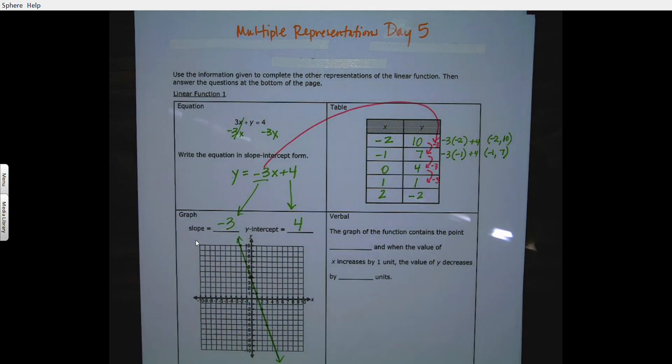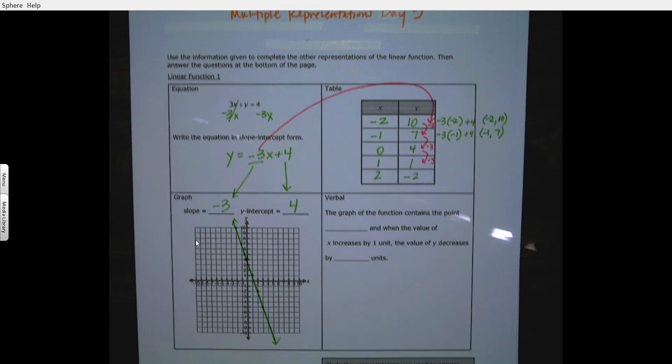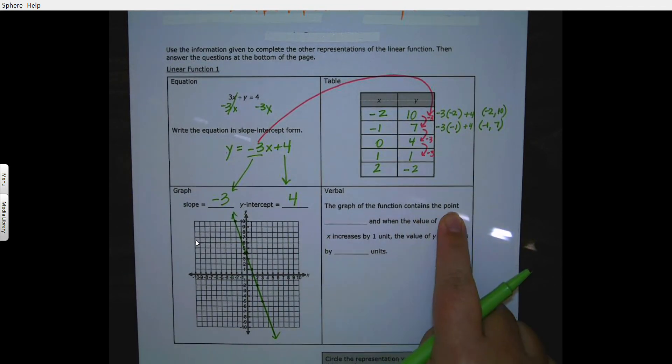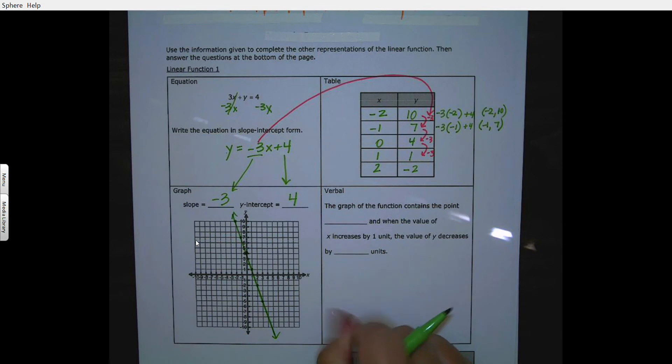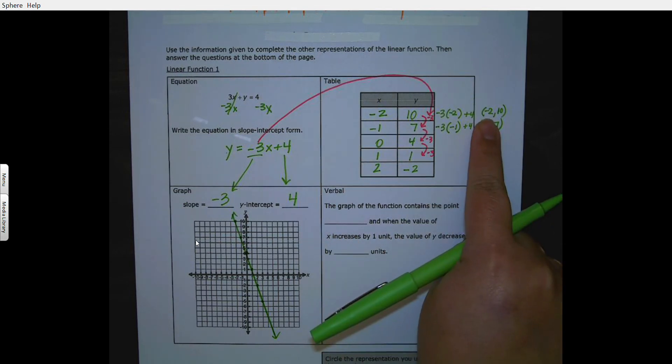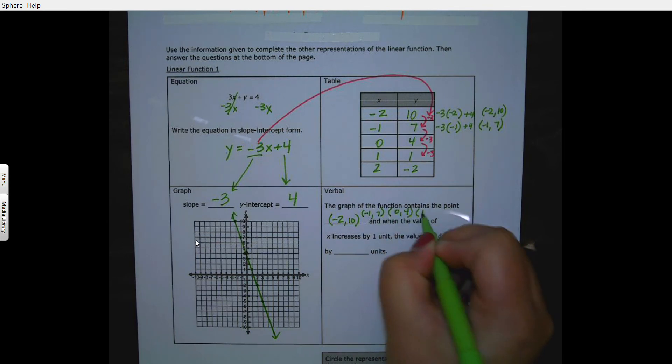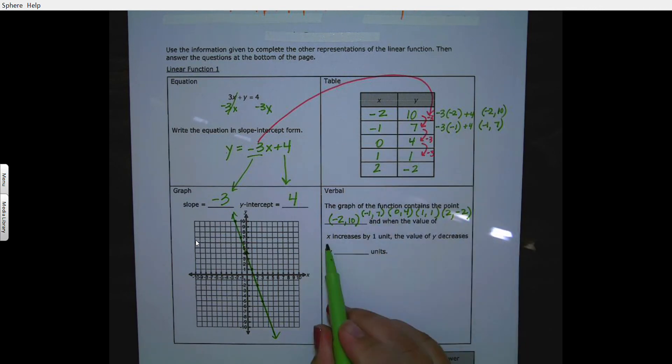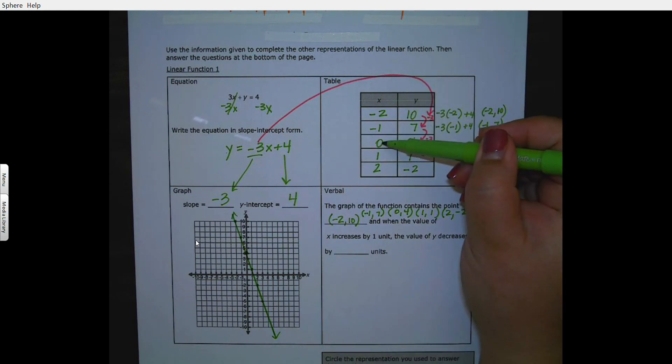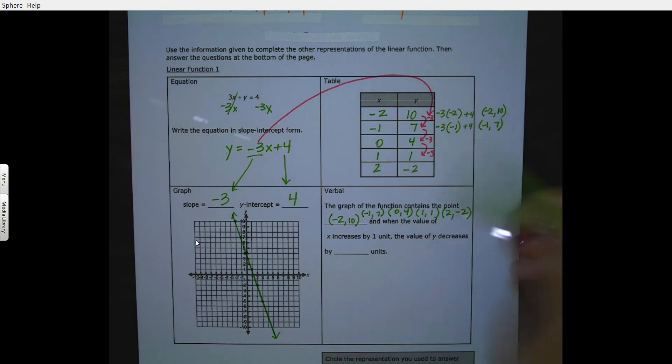The graph of the function contains the point. It contains negative 2, 10. I could have also put it contains negative 1, 7, it contains 0, 4, it contains 1, 1, it contains 2, negative 2. When the value of x increased by 1 unit, the y decreased by 3 units. That is your slope.